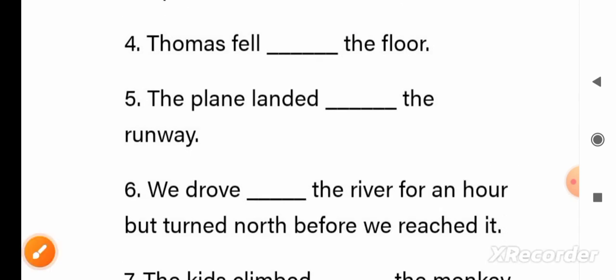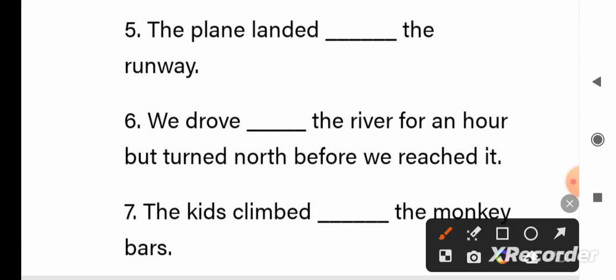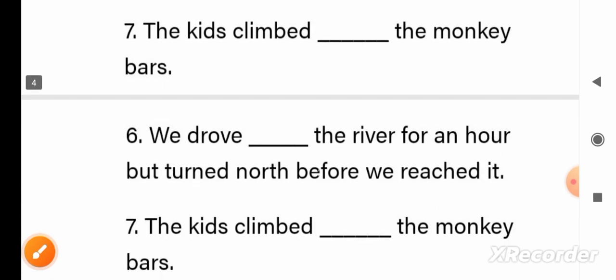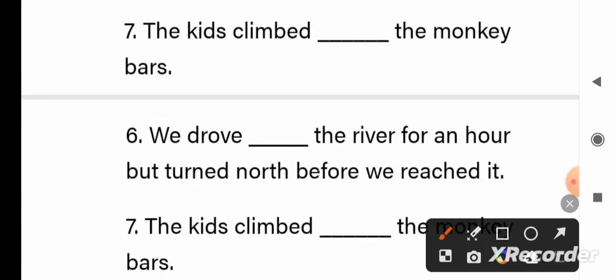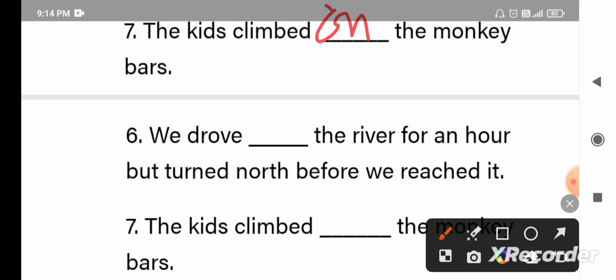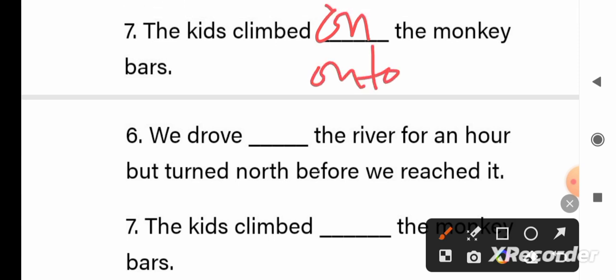Number five: the plane landed on the runway, it will be on. Six: we drove toward the river, it will be toward. We drove toward the river for an hour but turned north before we reached it. Now see the seven: the kids climb on or onto the monkey bars, anyone we fill here. The kids climb on the monkey bars or the kids climb onto the monkey bars.